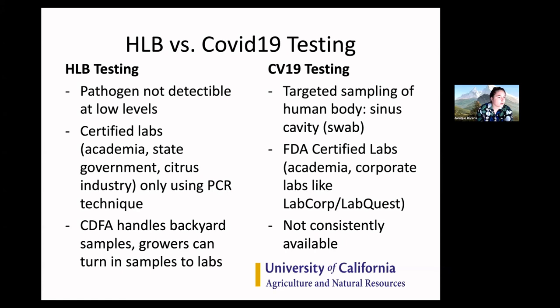Part of it is just sampling bias. Say the tree has HLB but it's only in 20 or 200 leaves out of 10,000 leaves on a mature tree — the likelihood that you would find that leaf, test it, and confirm that tree is positive with HLB is very unlikely. With COVID-19, if it has replicated enough, that targeted sampling should find it and you should get a confirmation.